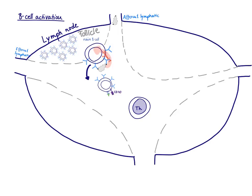What I've drawn here is a lymph node, and here you're going to find the naive B-cells in so-called follicles, because they always want to be close together. We're going to suppose there is an infection going on, so antigen is delivered via the afferent lymphatic into the lymph node. Here you can see a naive B-cell, and eventually a naive B-cell is going to recognize the antigen via its B-cell receptors.